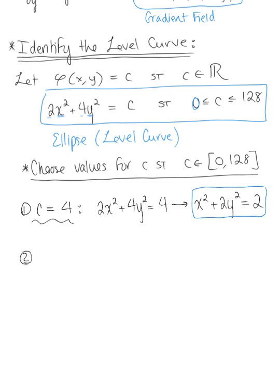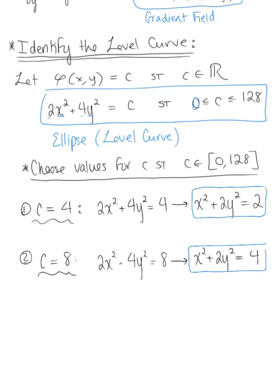For a second level curve, let c = 8. This gives us 2x² + 4y² = 8. Dividing both sides by 2 to simplify, we have the ellipse x² + 2y² = 4. This is the second ellipse we will sketch.